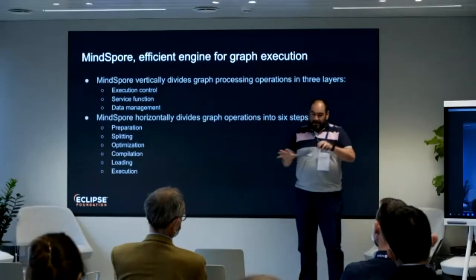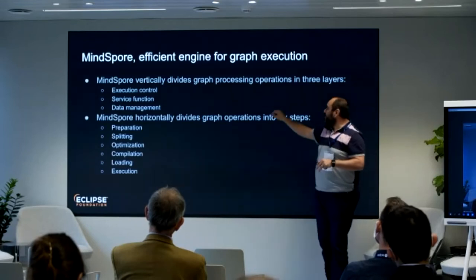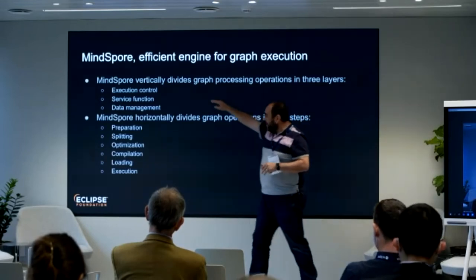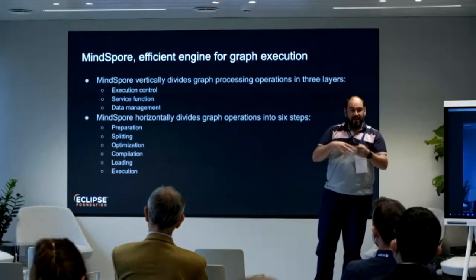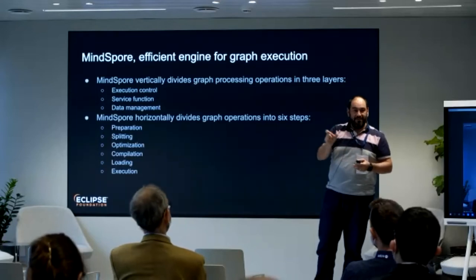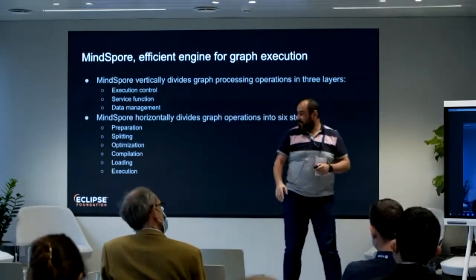For graph execution, MindSpore splits processing into three vertical dimensions: execution control, service control, and data management. The steps for graph processing are preparation, splitting, optimization, compilation, loading, and execution. You don't have direct control over these steps, but internally there are different stages where you can add hooks — for example, hooking into the optimization layer.